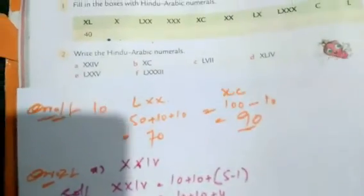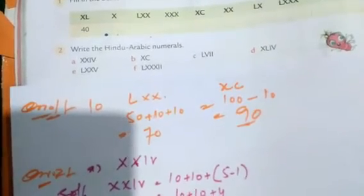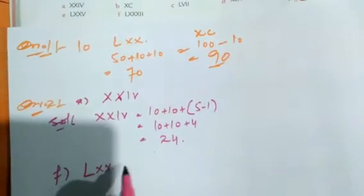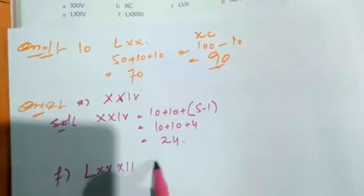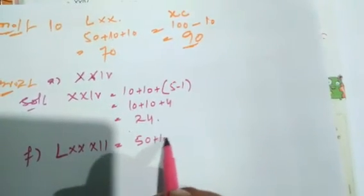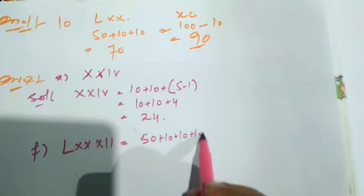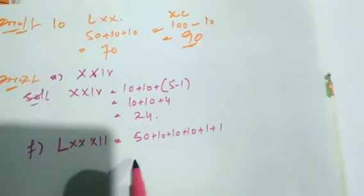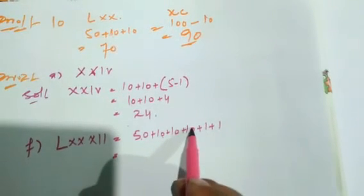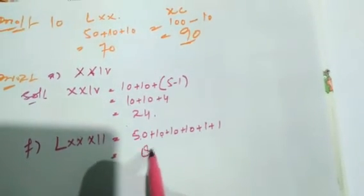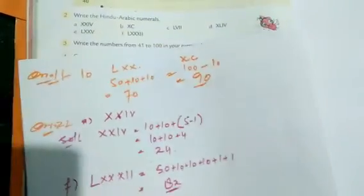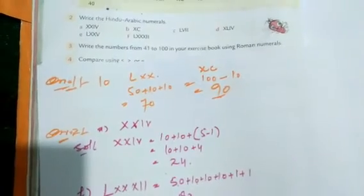For the next part, LXXXII — L means 50, then X, X, X means 10 plus 10 plus 10, and I, I means 1 plus 1. So 50 plus 30 plus 2 equals 82. The Hindu-Arabic numeral is 82. Other parts are solved similarly.